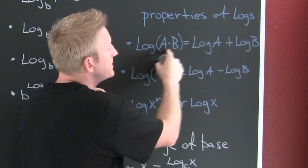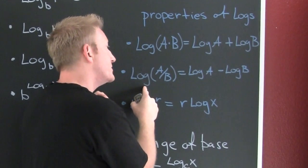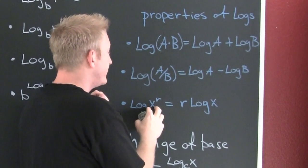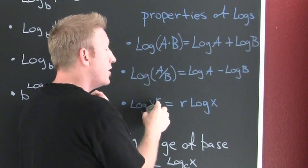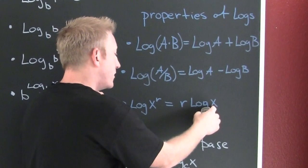The log of a product is the sum of the logs. The log of a quotient is the difference of the logs. And log of the argument to the r power is r times the log of the argument.